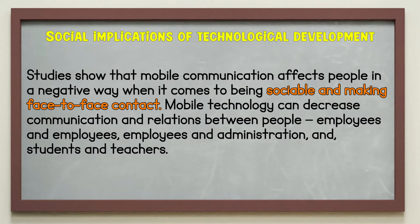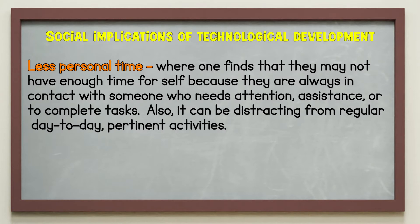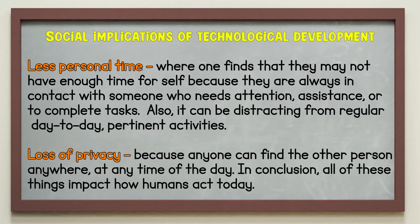Mobile technology can also reduce contact between students and teachers. Less personal time is another concern — one may find they don't have enough time for themselves because they are always in contact with someone who needs attention, assistance, or to complete tasks. It can also be distracting from regular day-to-day pertinent activities. Loss of privacy is another issue, because anyone can find another person anywhere at any time of the day.